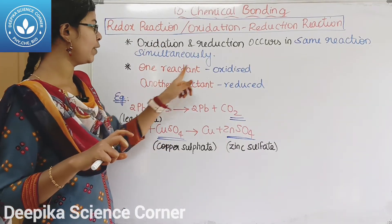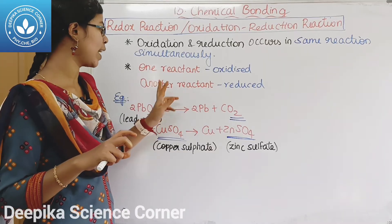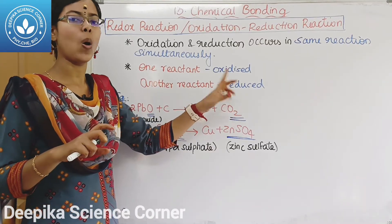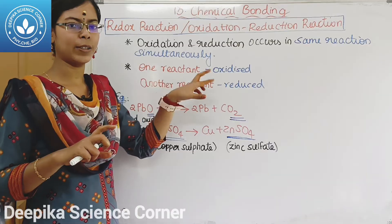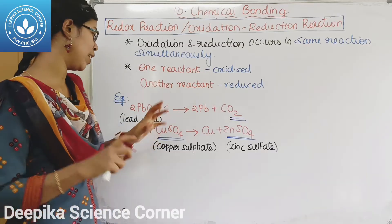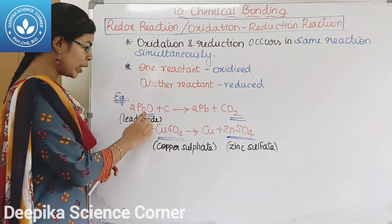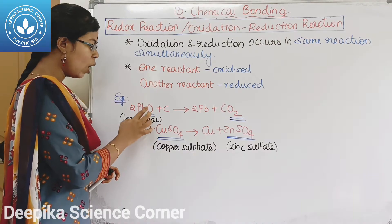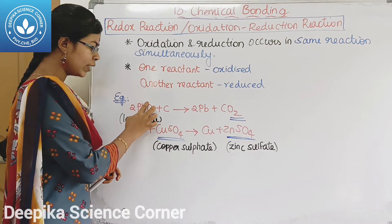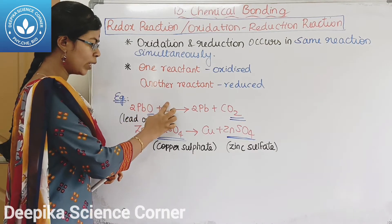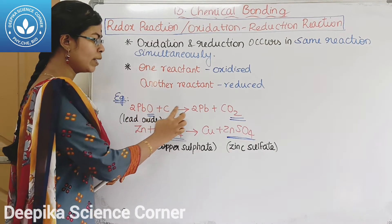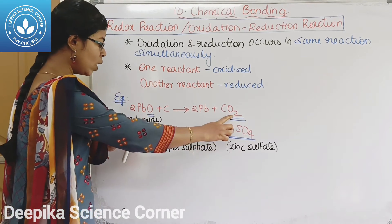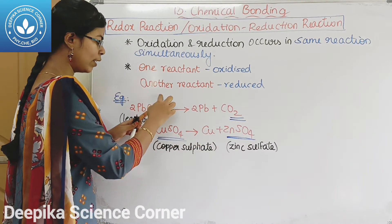In a redox reaction, one reactant is oxidized while another is reduced simultaneously. For example, 2PbO + C gives Pb + CO2. Here, carbon gains oxygen to form carbon dioxide (oxidation), while lead oxide loses oxygen (reduction). This is the redox reaction.